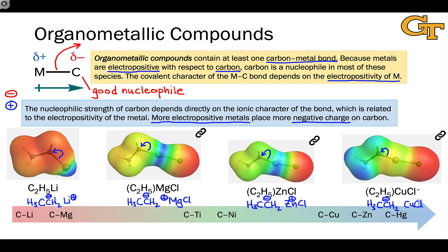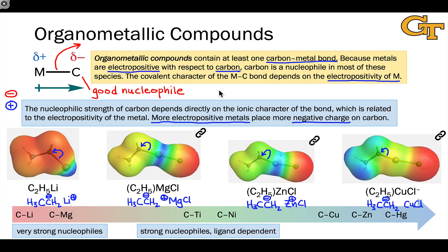We can think of organometallic compounds as existing on a continuum. On the left-hand side, we have compounds in which the carbon-metal bond is essentially completely ionic — C− M+. These are Grignard reagents containing carbon-magnesium bonds and organolithiums containing carbon-lithium bonds. In the middle, within the transition series, we get compounds that are still strong nucleophiles at carbon but whose reactivity can be modified based on what else is bonded to the metal center — things like carbon-titanium, carbon-nickel, carbon-palladium complexes, where other ligands present in the organometallic complex can affect reactivity.